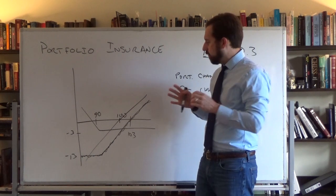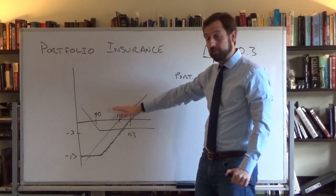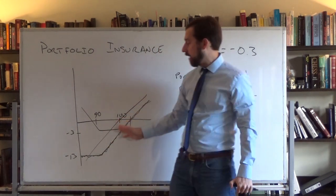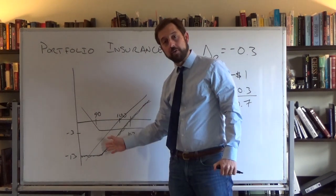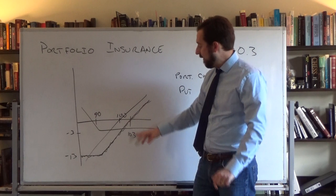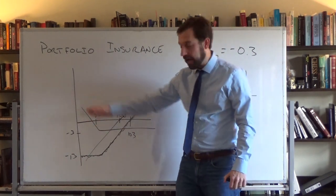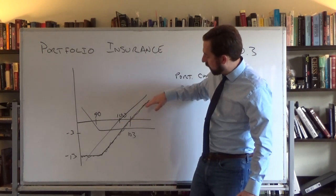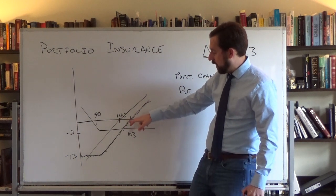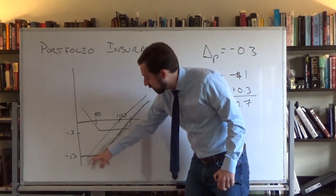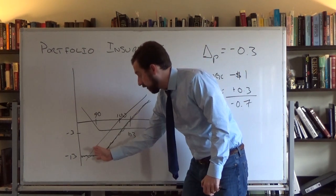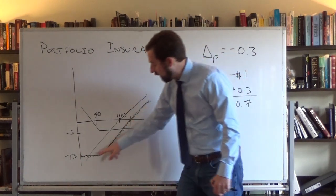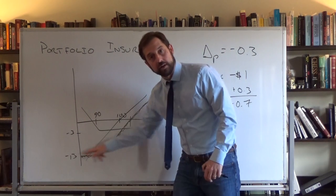As a brief review of what we want to recreate: a protective put position. Say I have a portfolio at 100 right now and I want to stop my losses — if the portfolio drops below 90, I don't want to lose any more. The idea is we buy a put option for $3. That means our portfolio would break even at 103, our maximum loss is 13, but if the portfolio falls to 89 or 87, we still only lose 13. So we're going to recreate this protective put position, which is this squiggly line.